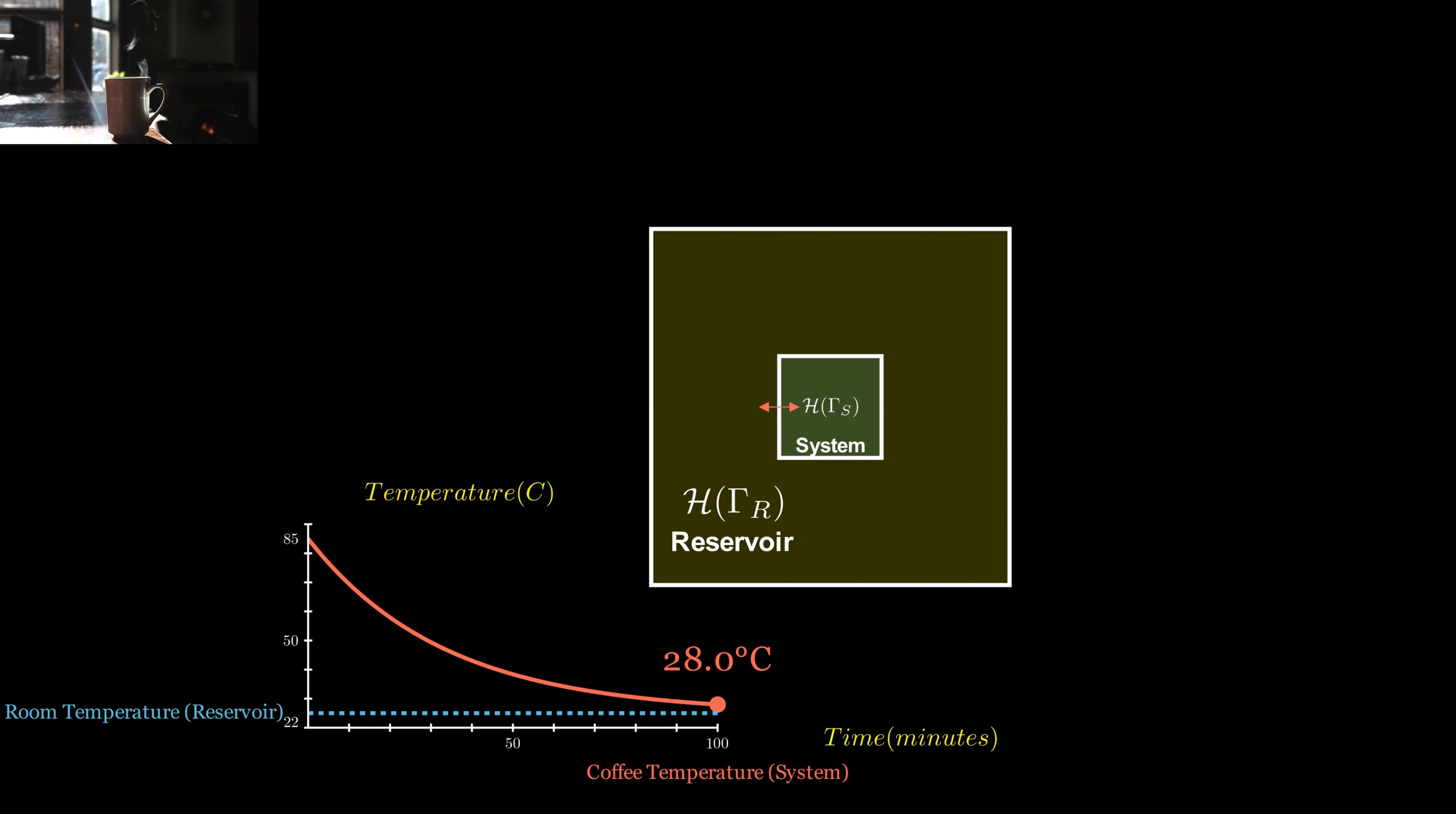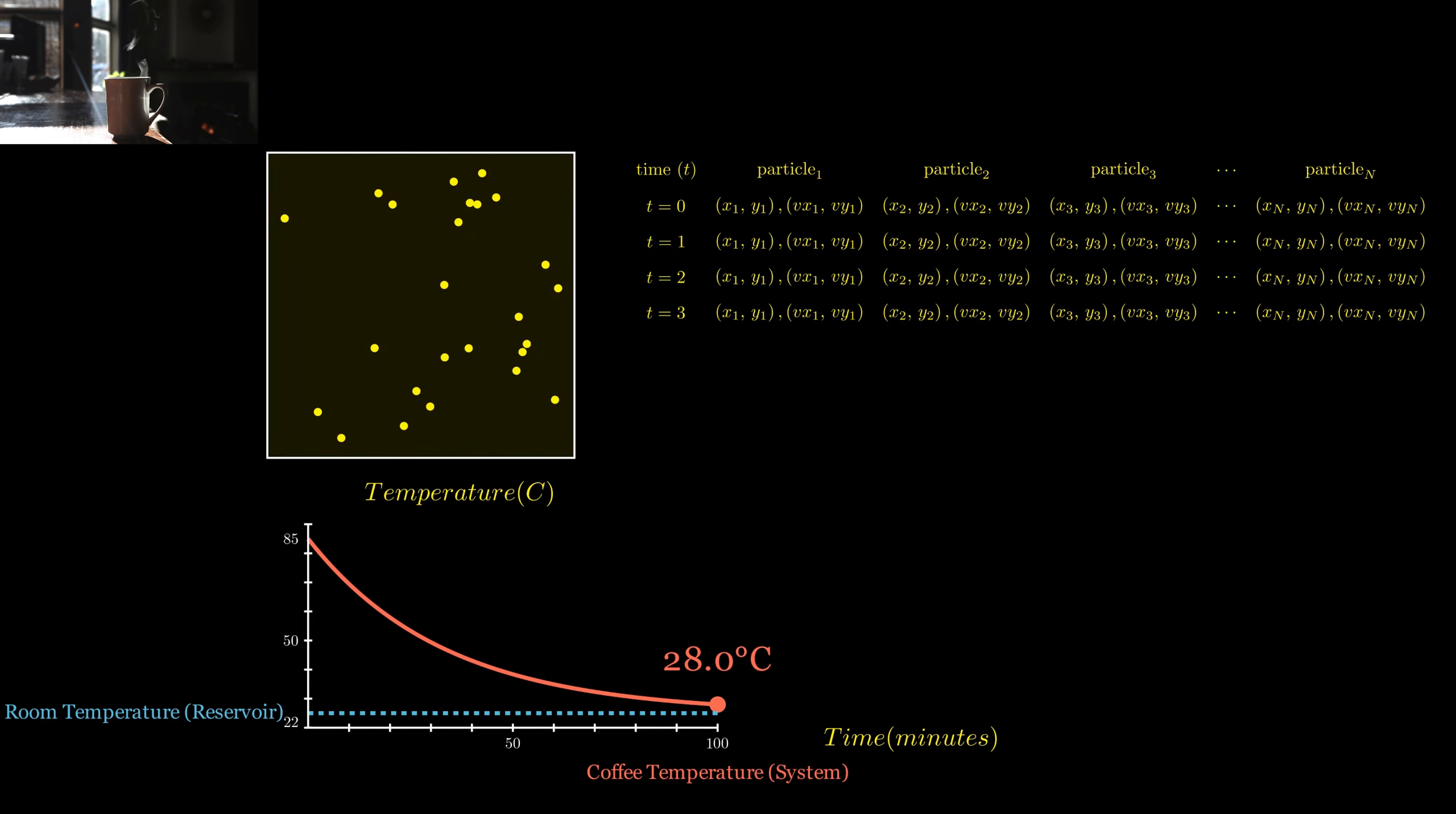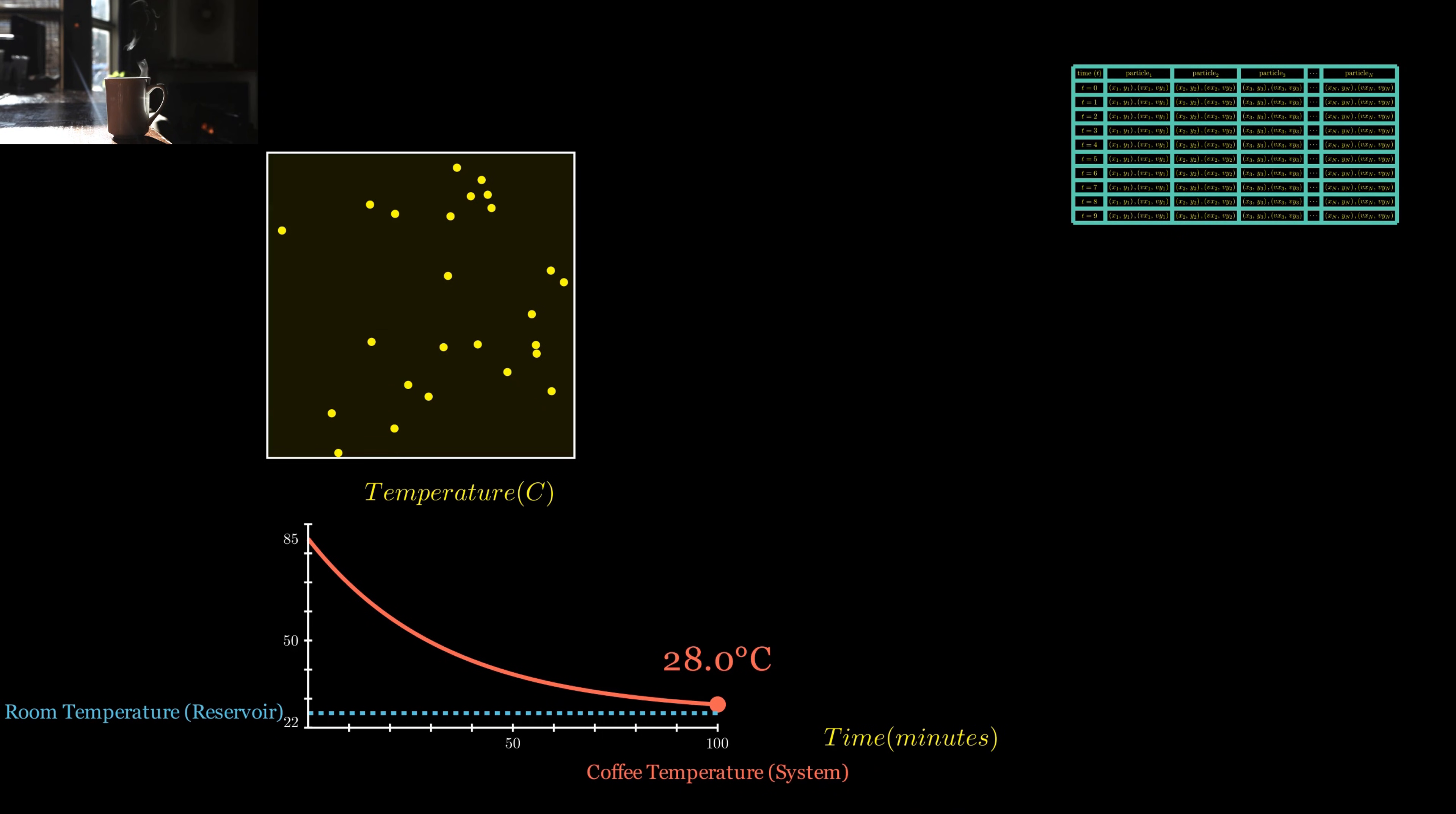Your data sets behave in a very similar way. Imagine you record a video of particles bouncing inside a container. Now, turn each frame of that video into a row of a spreadsheet. The columns? They're just the positions and velocities of the particles. What you have is exactly what a machine learning data set looks like. Physical systems follow certain probability laws when they reach equilibrium.